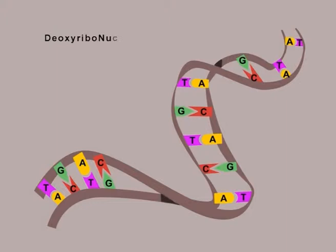DNA is a molecule called deoxyribonucleic acid. It comes in the form of a twisted ladder called a double helix.